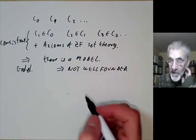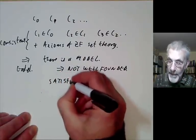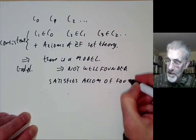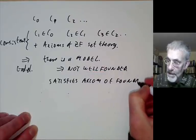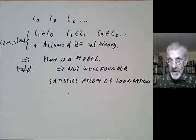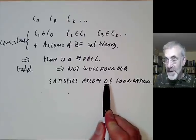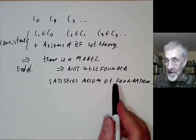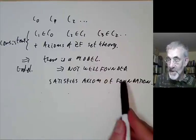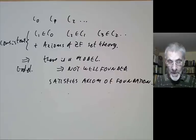Well, we seem to have got a contradiction because the model also satisfies the axiom of foundation. So we appear to have found a contradiction — the axiom of foundation implies a set is well-founded, and here we've got a model of ZF that's not well-founded but still satisfies the axiom of foundation. So what is going wrong?